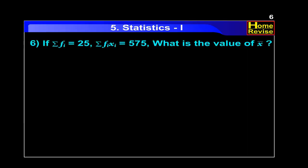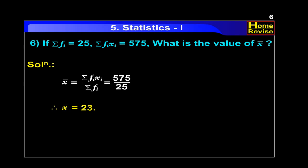Question number 6. If summation FI is equal to 25 and summation FI·XI is equal to 575, what is the value of x-bar? X-bar equals summation FI·XI upon summation FI, that is 575 upon 25. So x-bar is 23.